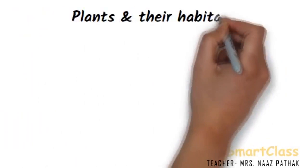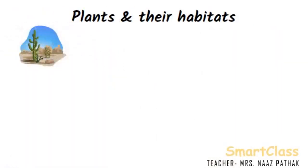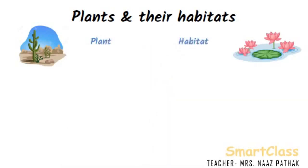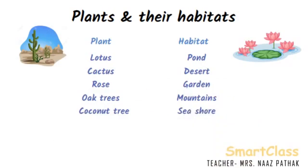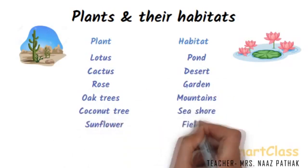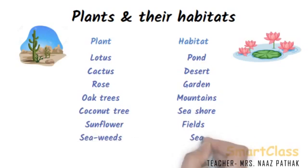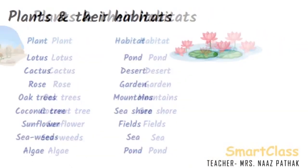So, here are plants and their habitats. Habitat of cactus is desert, whereas lotus plant grows and lives in the water of a pond. Some common examples: Lotus is seen in pond, cactus is found in desert, rose is found in garden, oak trees survive on mountains, coconut tree is found on seashore, sunflower grows well in fields, seaweeds is found in sea, and algae is seen in ponds.